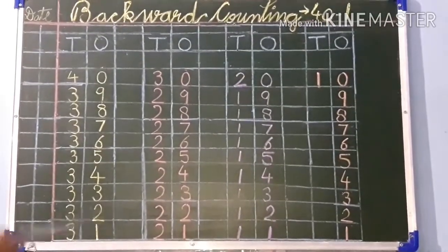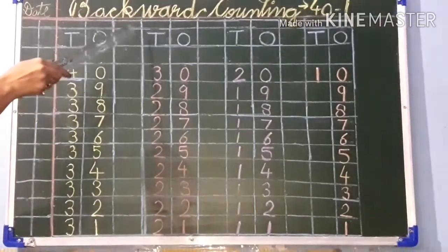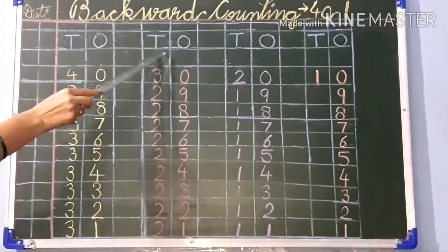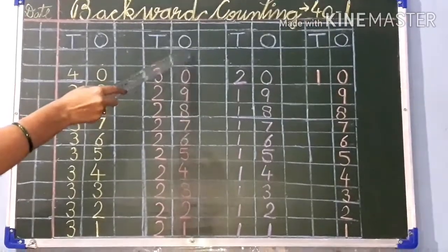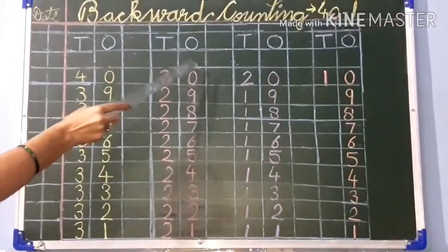Okay children? Now after leaving 1-1 block you have to write T O again. T for tens, O for ones. Then leave 1-1 block here.